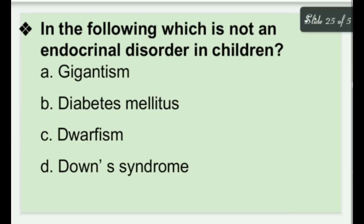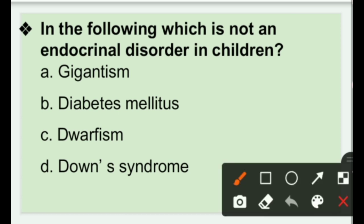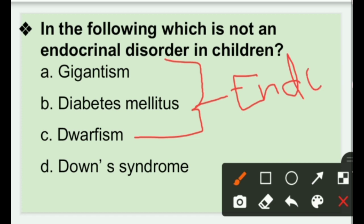Next question: Which of the following is NOT an endocrinal disorder in children? Options: gigantism, diabetes mellitus, dwarfism, or Down syndrome. These first three are all related to endocrine glands. The right answer is option D — Down syndrome — because Down syndrome is a chromosomal disorder due to abnormality of chromosome 21, also known as trisomy 21. It is not an endocrine disorder.